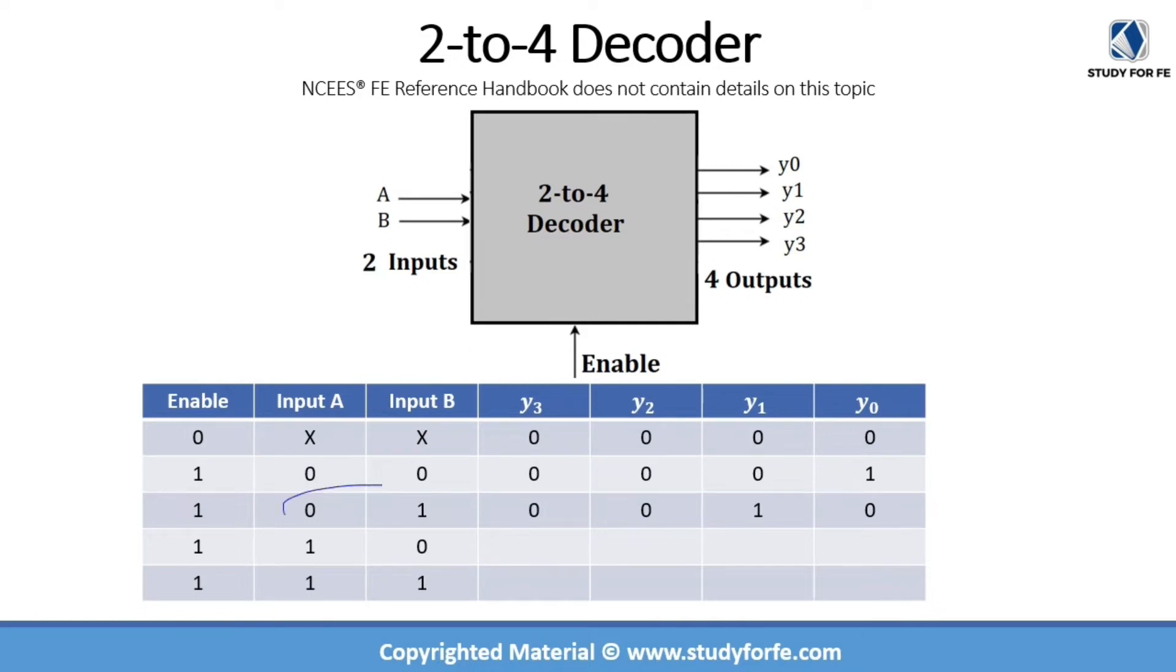Then we have 0,1 in binary which is equal to 1 in decimal, and this will correspond to y1. Then we have 1,0, which corresponds to 2 in decimal, so this will activate y2. And finally, we have 1,1, which corresponds to 3, and this will enable y3. So you can see that by using different combinations of inputs, we are able to enable any of these output values. So this is how a decoder works fundamentally, and it allows us to manipulate or select output values depending on different input values.